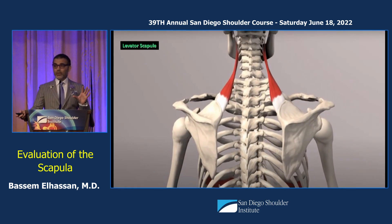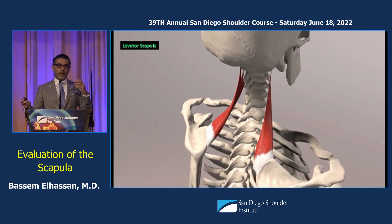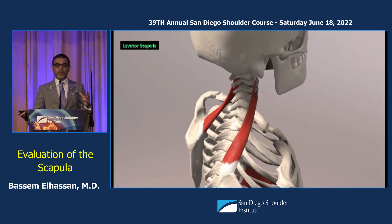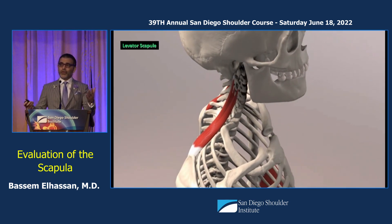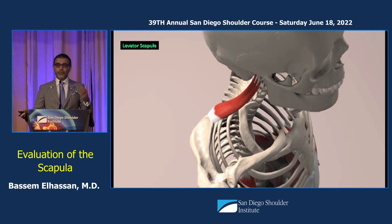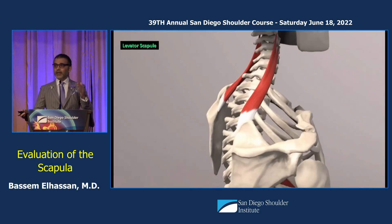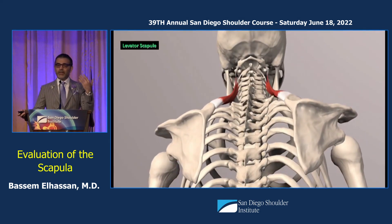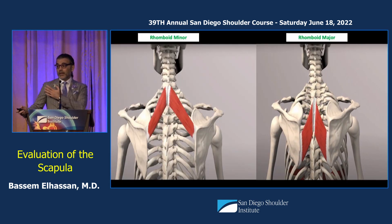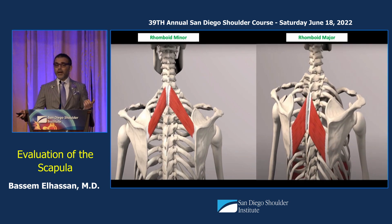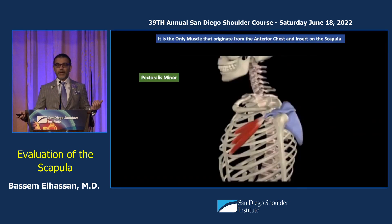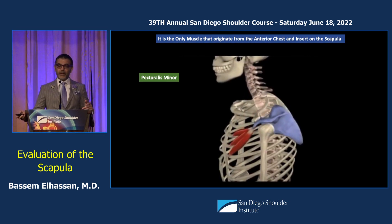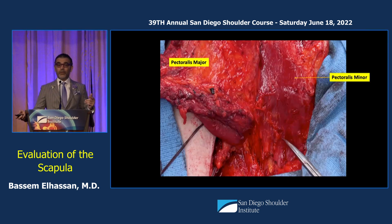Let's talk about the muscles. There are six muscles around the scapulothoracic articulation that are important, and their function — most of you as shoulder surgeons don't deal with them as much. Levator scapula inserts medially; it lifts the scapula but does not bring the acromion up. Rhomboid minor and rhomboid major mostly retract the scapula close to the spine. The pectoralis minor is the very annoying muscle that brings the scapula anterior — it can mimic winging or STEM.